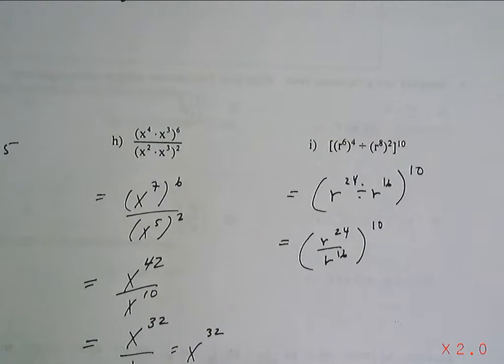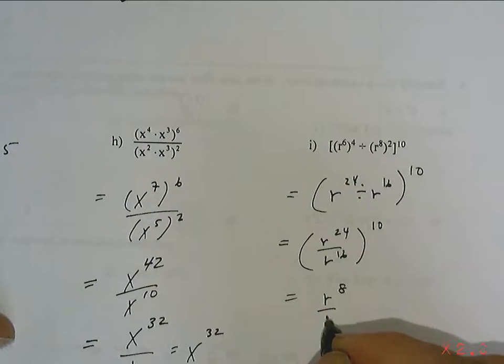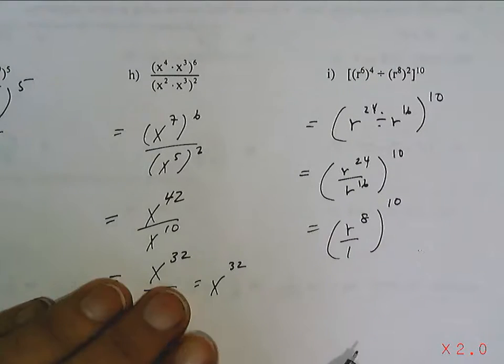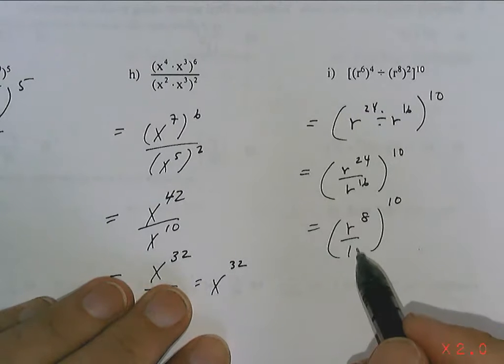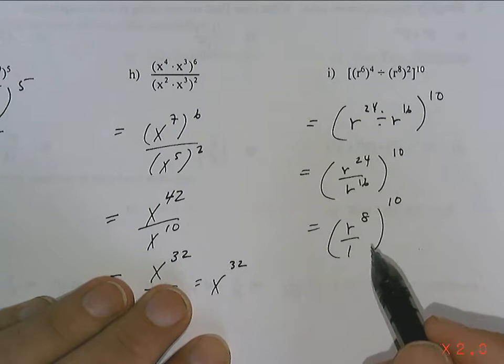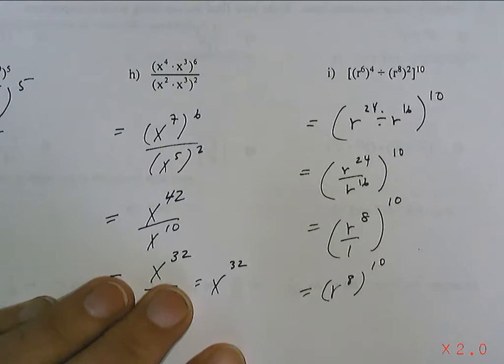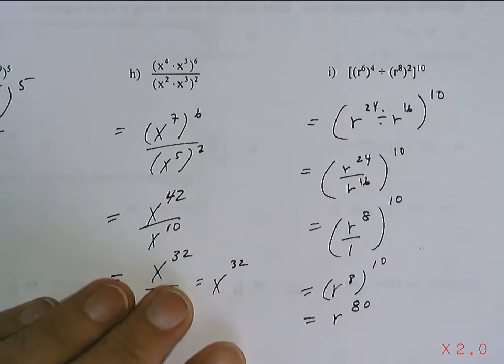Now, where are there more R's? There's more R's on the top. How many more? Eight of them. So, it's actually R to the 8 over 1. But nobody really cares about the 1, right? Because when the 10 comes in, it's going to go to the top and the bottom. But 1 to the 10 is still just 1. It doesn't change anything. So, I might as well just think about this like this, which is simply going to be R to the 80. And that's your final answer.